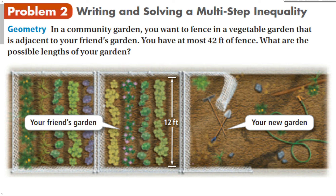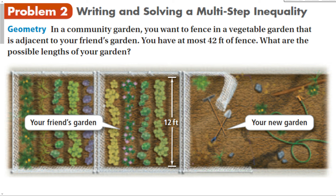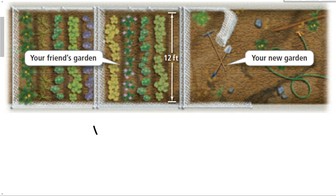If you want to fence a garden, you're going to put one, two, three, four sides to have a complete fence. If I want to know the distance around a figure, that's usually the perimeter. The perimeter is going to be twice the length plus twice the width. I know the width has to be 12 feet, because it has to match up with the neighbor's garden.